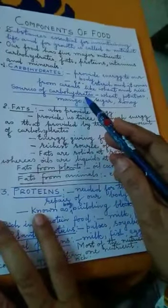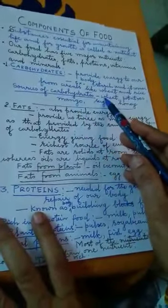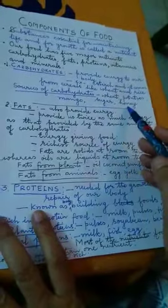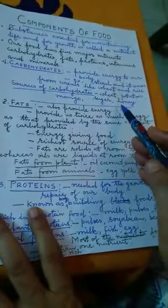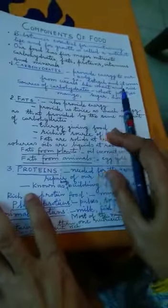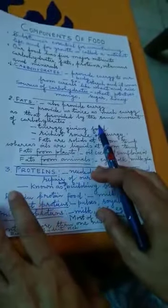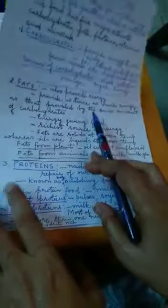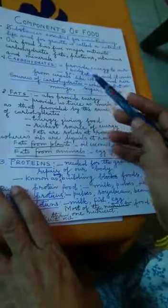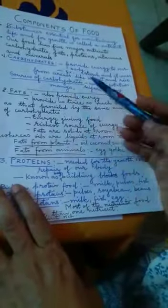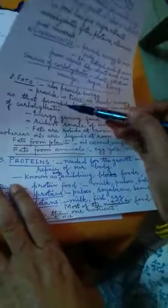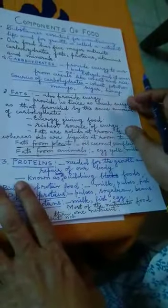Sources of carbohydrates are wheat, potatoes, mango, sugar, and honey. All of us know that carbohydrates are energy-giving and we require them in our balanced diet. Carbohydrate is a major part of our food.